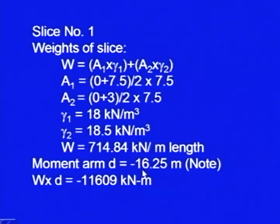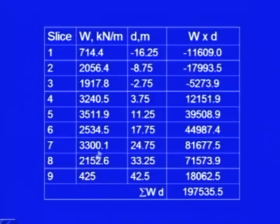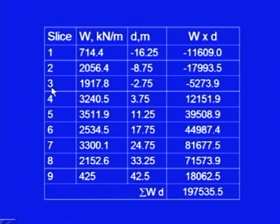The moment arm D will be equal to −16.25; note that I am taking it negative here — it is on the left side of the vertical line passing through center O. So W × D is the moment. I do this calculation for all the slices: slice number 1 has a negative D value, slice number 2 is negative, slice number 3 is negative, then slice number 4 has a positive D = 3.75, and then it goes on increasing. I calculate these moments for different slices: −11609 and so on, and then we calculate the sum of the moments.